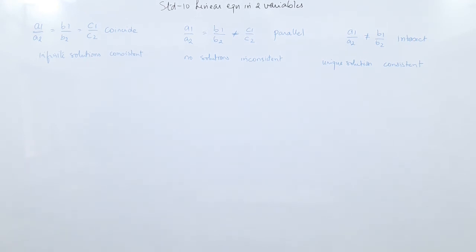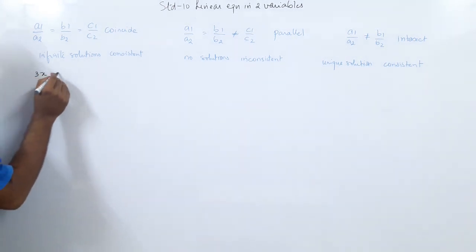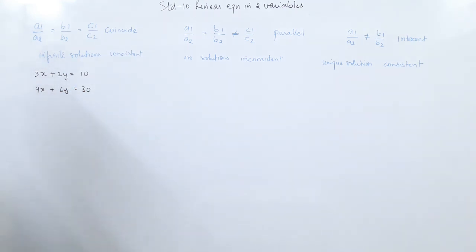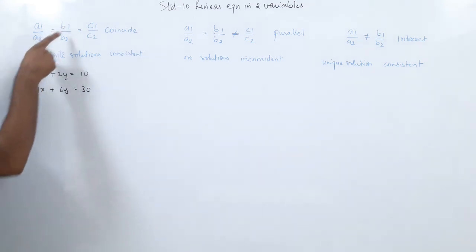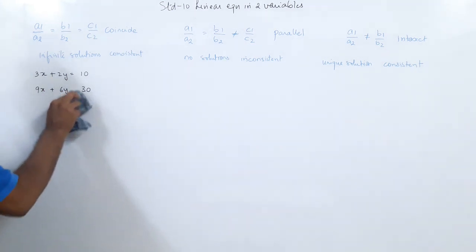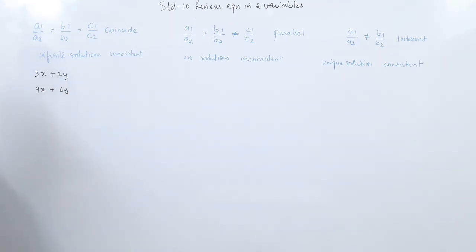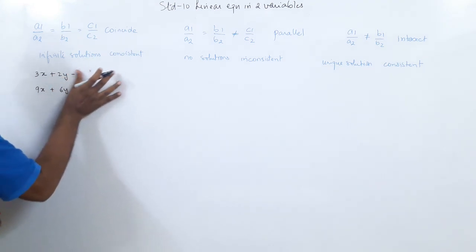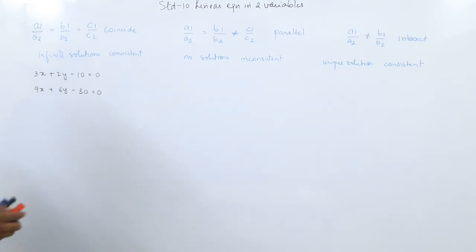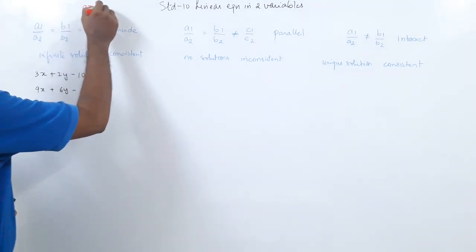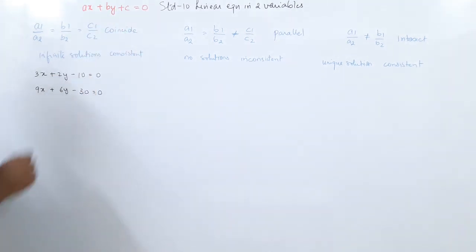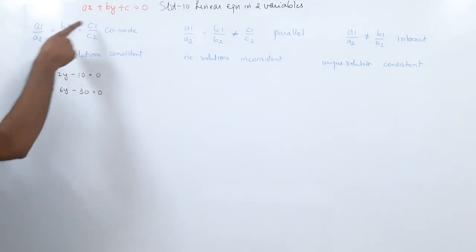Now we will see a few examples. Let the first equation be 3x + 2y = 10 and the second equation be 9x + 6y = 30. Here a1 = 3, b1 = 2, c1 = 10. To write the standard form ax + by + c = 0, we move the constants to the left side: 3x + 2y − 10 = 0 and 9x + 6y − 30 = 0. So c1 = −10 and c2 = −30.